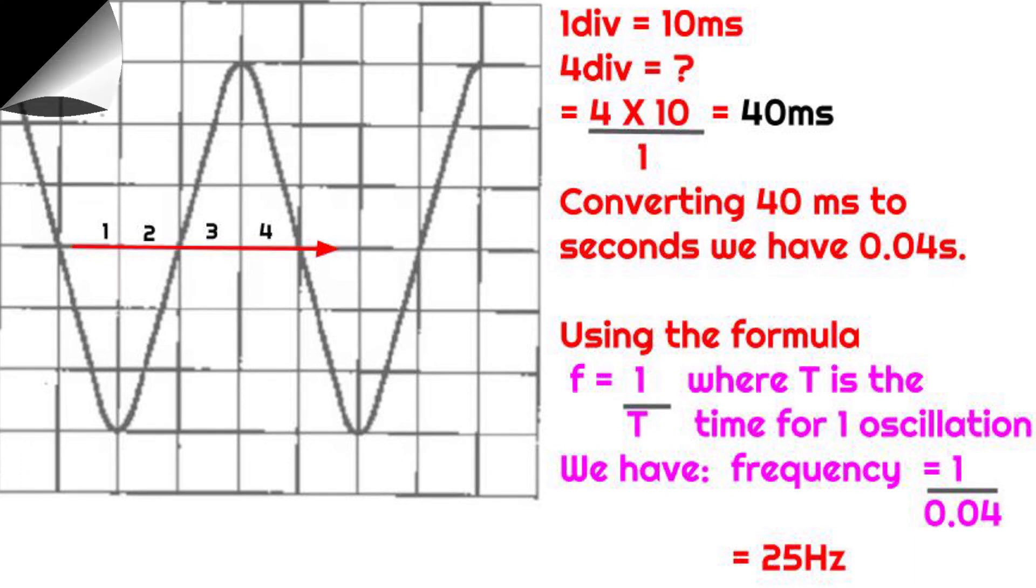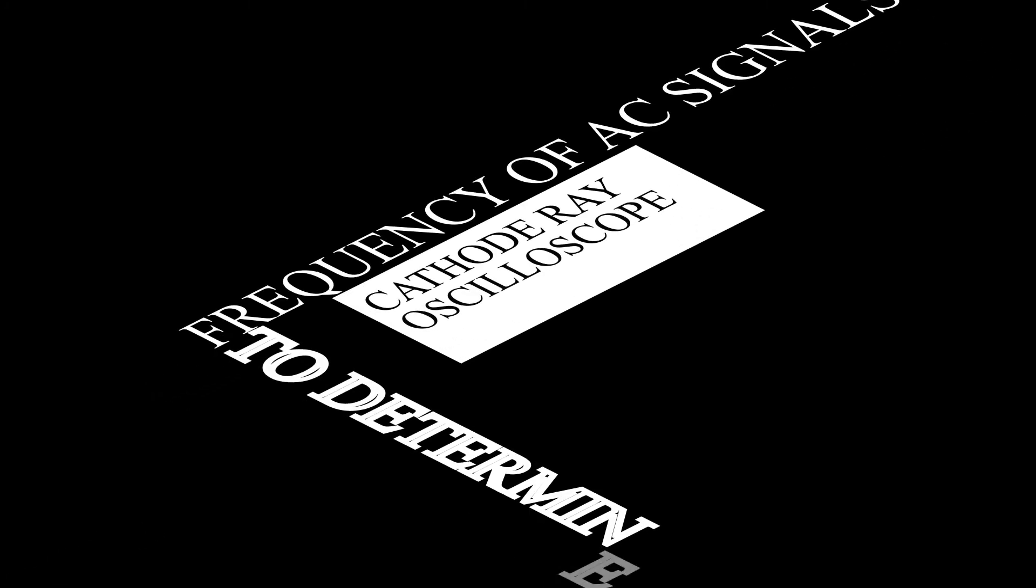Well, that's how you can use the cathode ray oscilloscope as a voltmeter to measure voltages and also to determine the frequency of AC signals.